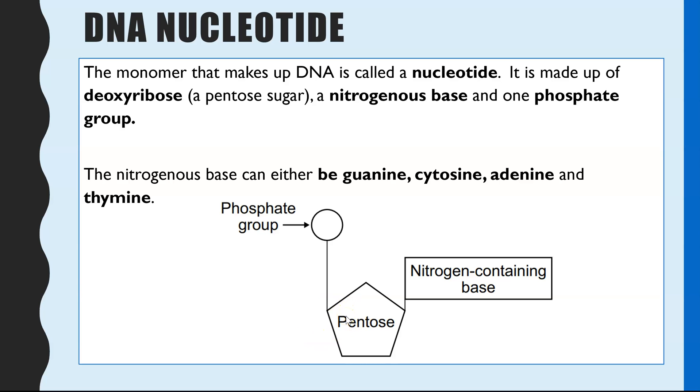And then you need to know the four names of the nitrogenous bases, not just the letters representing them. So for example, G is guanine, C is cytosine, A is adenine, and T is thymine. So that is your DNA nucleotide.